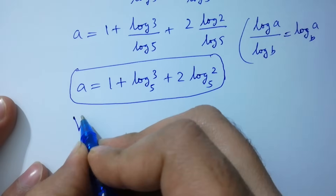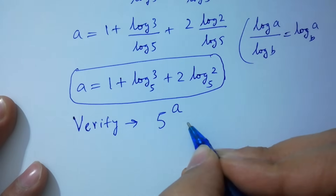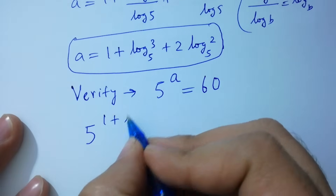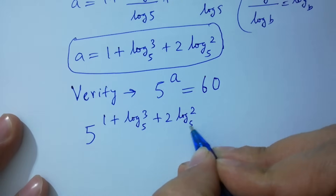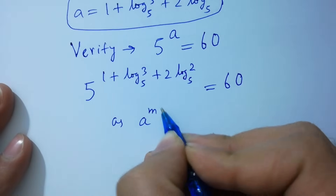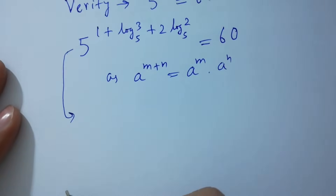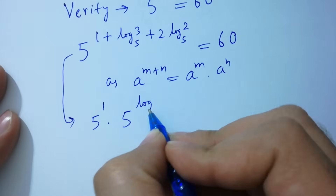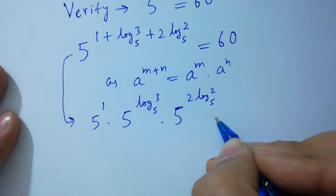Now verify: 5 to the power a equals 60. With a equal to 1 plus log base 5 of 3 plus 2 log base 5 of 2, we have 5 to that power equals 60. Using the rule a to the power m plus n equals a to the power m times a to the power n, it becomes 5 to the power 1, times 5 to the power log base 5 of 3, times 5 to the power 2 log base 5 of 2, equal to 60.